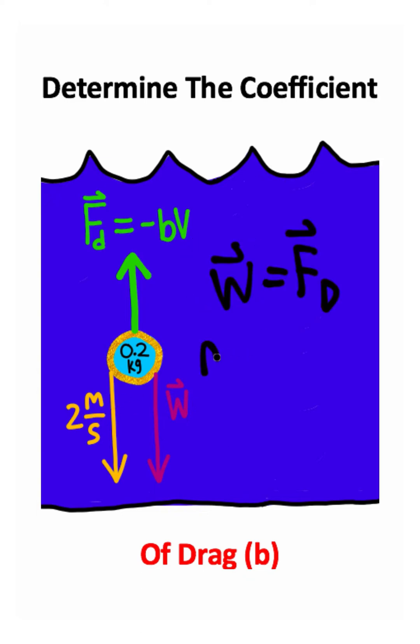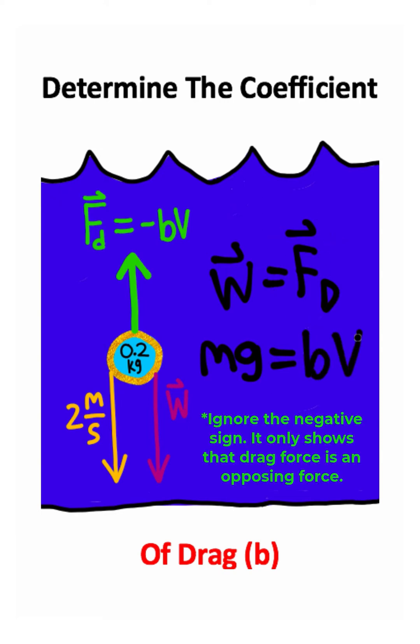So we know that the weight force is mass times gravitational acceleration, and then drag force is just going to be b times v. Let's see if we can use this equation to solve for our coefficient of drag.